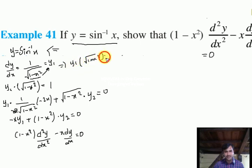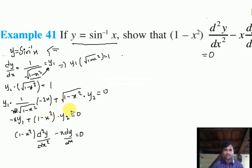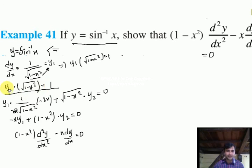By transferring that term, y₁ · √(1 - x²) = 1, and the problem becomes very easy. This approach applies to many problems — like the 3cos(log x) + 4sin(log x) problem or the (tan⁻¹x)² problem. Whenever you have a denominator, immediately transfer it to the right-hand side to get a u·v form when finding the second order derivative.